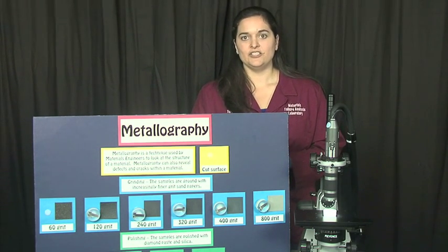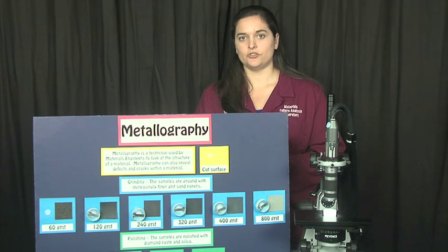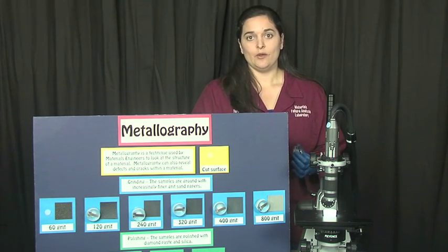We then use acids to etch away the very top layer of the metal so that we can see the structure of the material, and that way we can determine the quality.